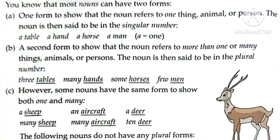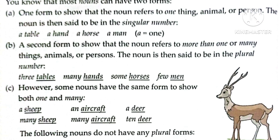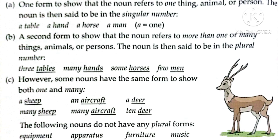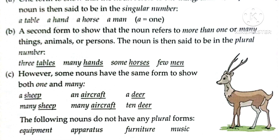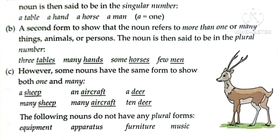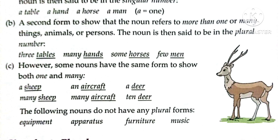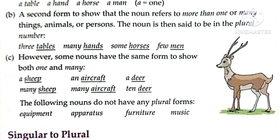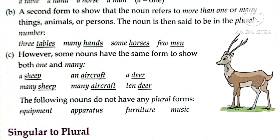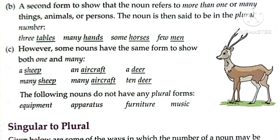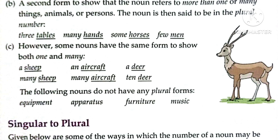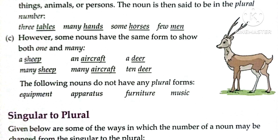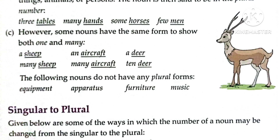The second form is when the noun is used for more than one or many things. It can be used for things, animals, and persons. The noun is then said to be in the plural number. Examples: three tables, many hands, some horses, few men.